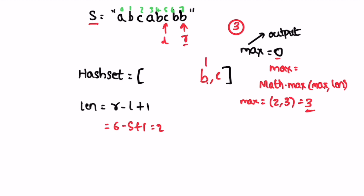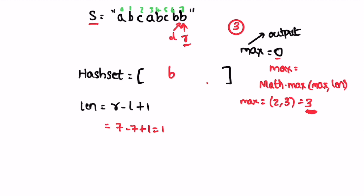Next iteration: element at right is 'b', which is present. Remove 'c' at left, increment left. 'B' is still present, so remove that element too, increment left. Now 'b' is not present, so add it. Length is right 7 minus left 7 plus 1 equals 1; max remains 3. Right has now reached the end of the string, so we end the iteration and return whatever is in max. So 3 is returned as the output.